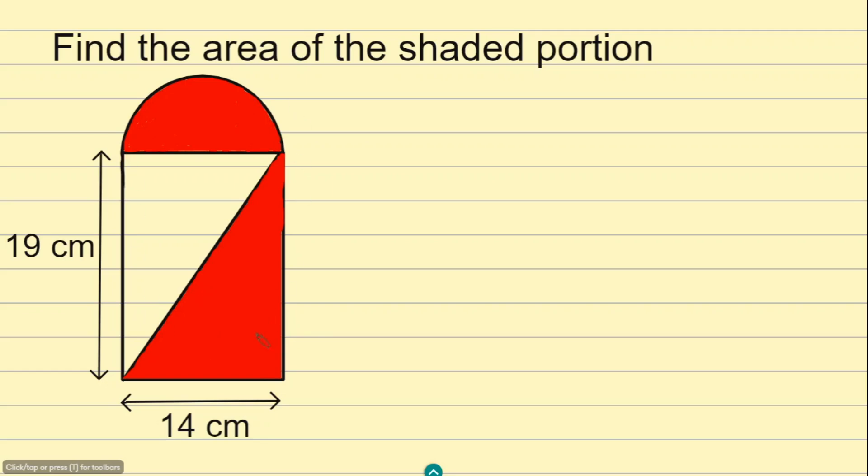If you look at the compound shape here, you'll find it has two parts shaded: the semicircle and the triangle. So we're going to find each of their areas.